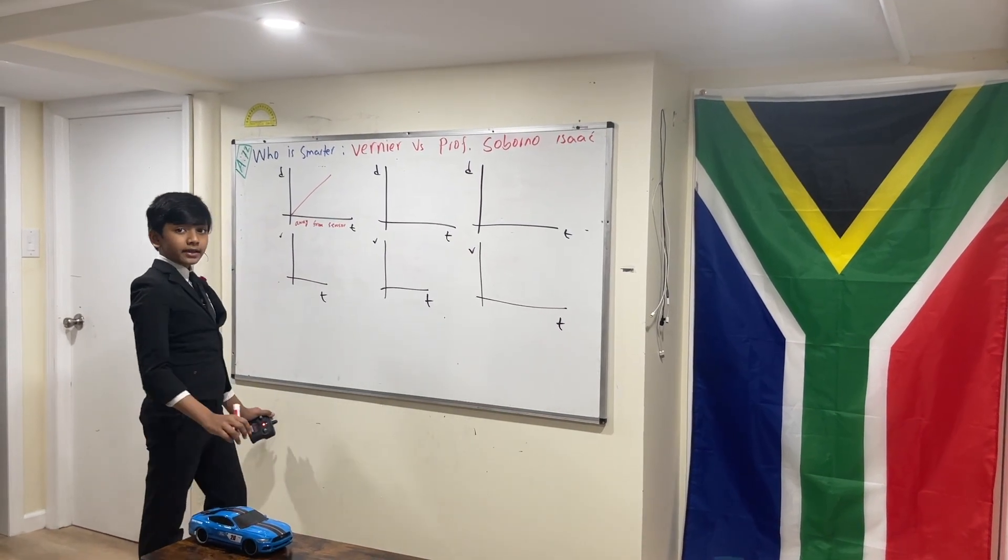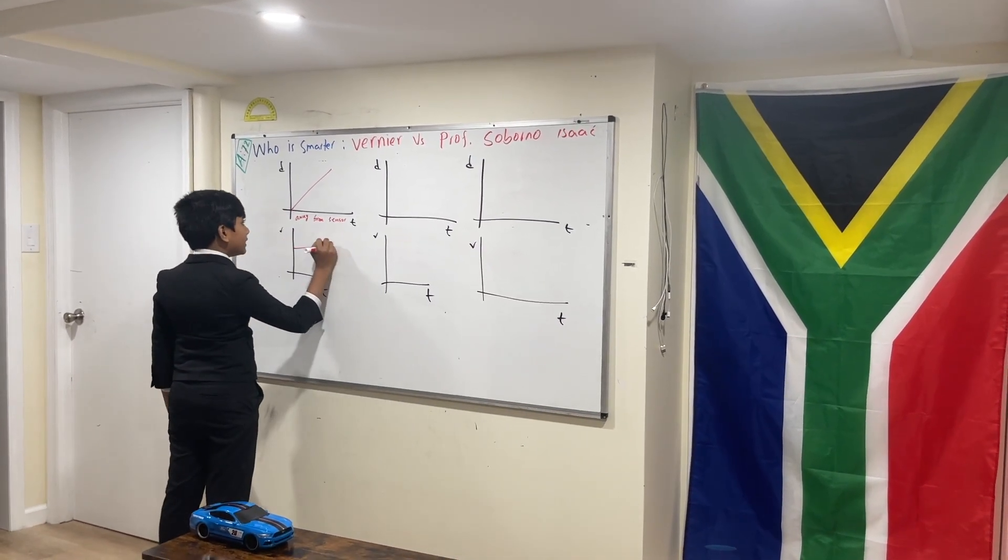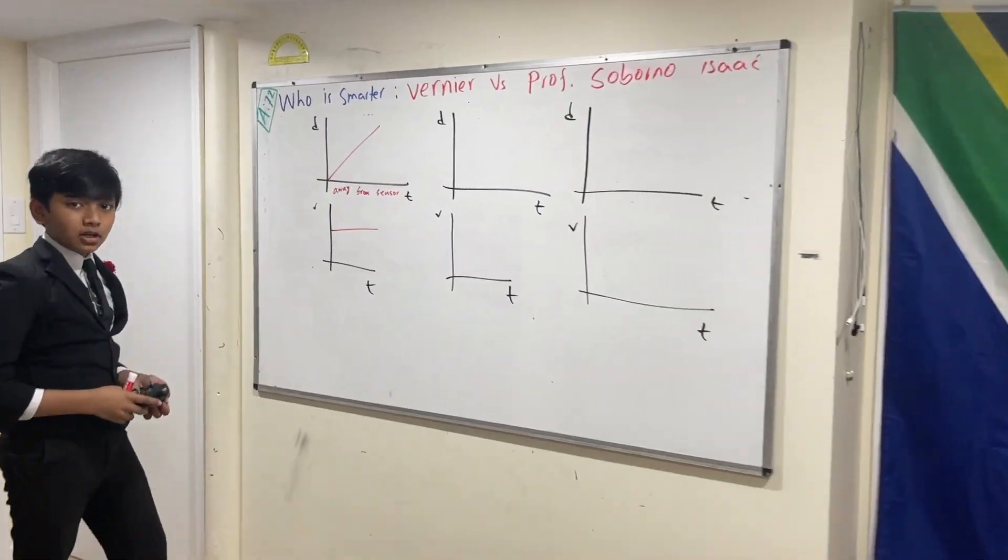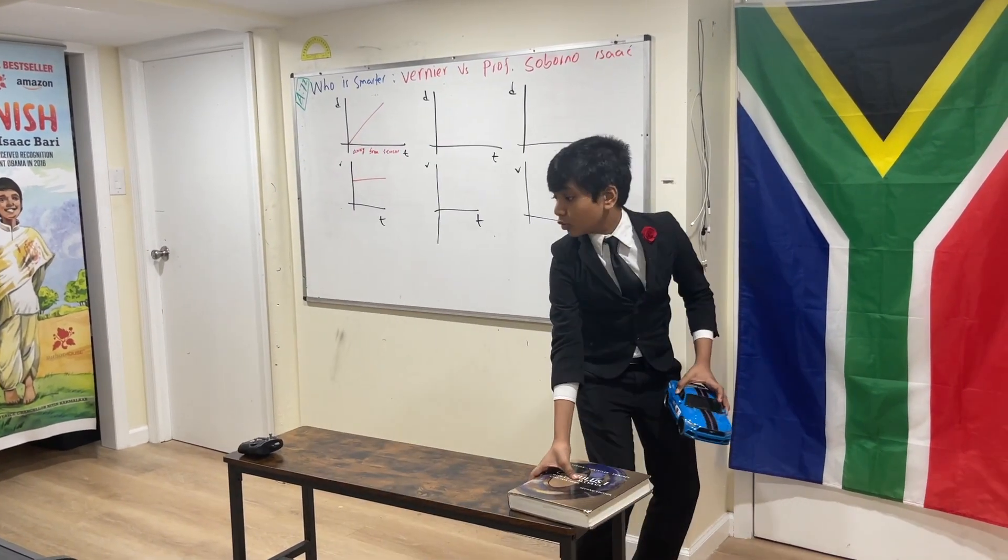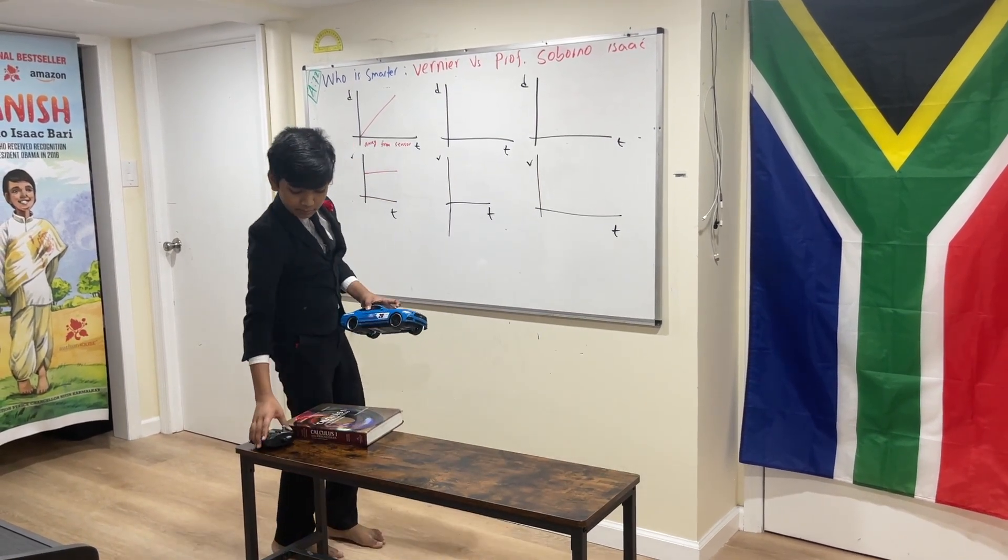And how would the VT graph look like? Well, it would look like this because it's a constant cause of loss. I'm going to have to rearrange this for this one. Because it's away from me. Towards me, not away from me.